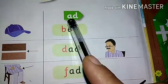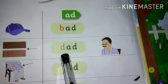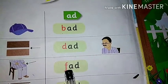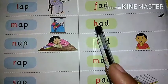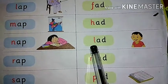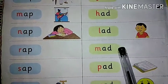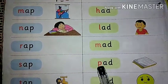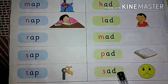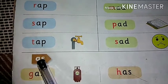Now -ad phonic words. A-D — add. B-add — bad. D-add — dad. F-add — fad. H-add — had. L-add — lad. M-add — mad. P-add — pad. S-add — sad. Now -as words are given: A-S — as. G-as — gas. H-as — has.